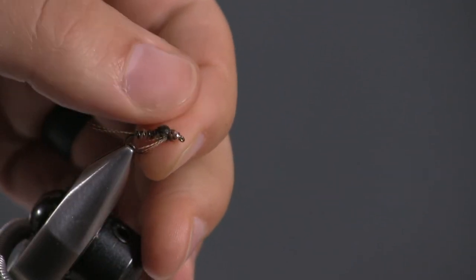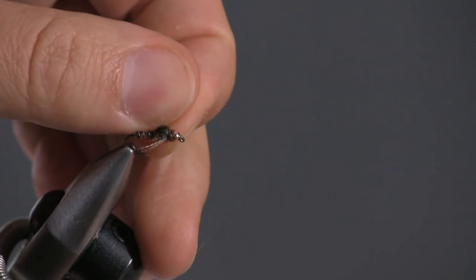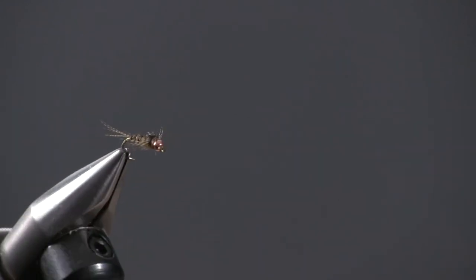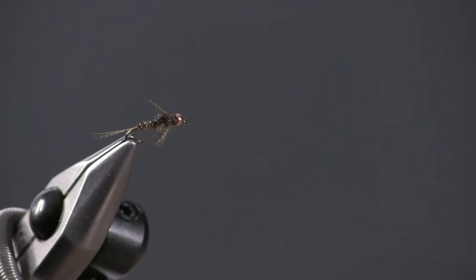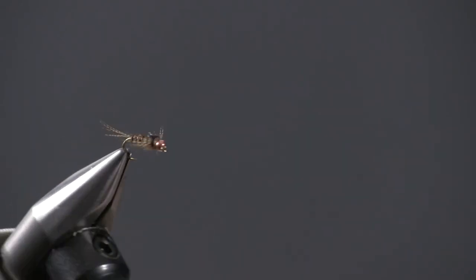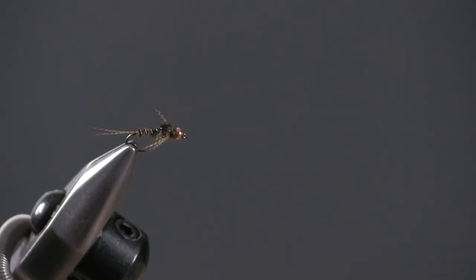And that is the bead-headed PMD turkey tail nymph. This pattern works really well during a PMD hatch. I fish it under a dry fly. I'll fish it as a dropper under like a big attractor like a chubby Chernobyl. And it catches fish anywhere there's pale morning duns in the water. This is a really effective pattern.